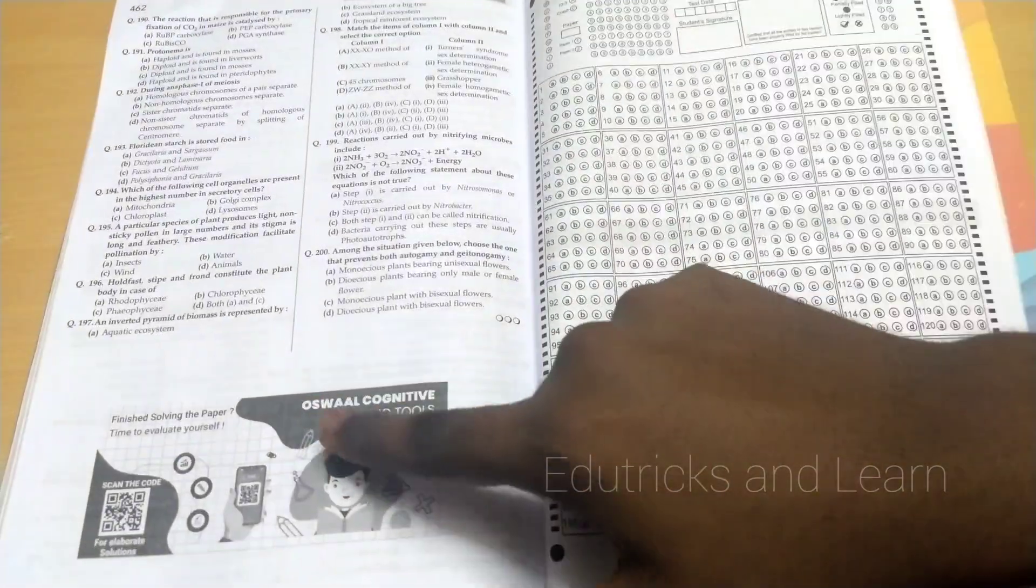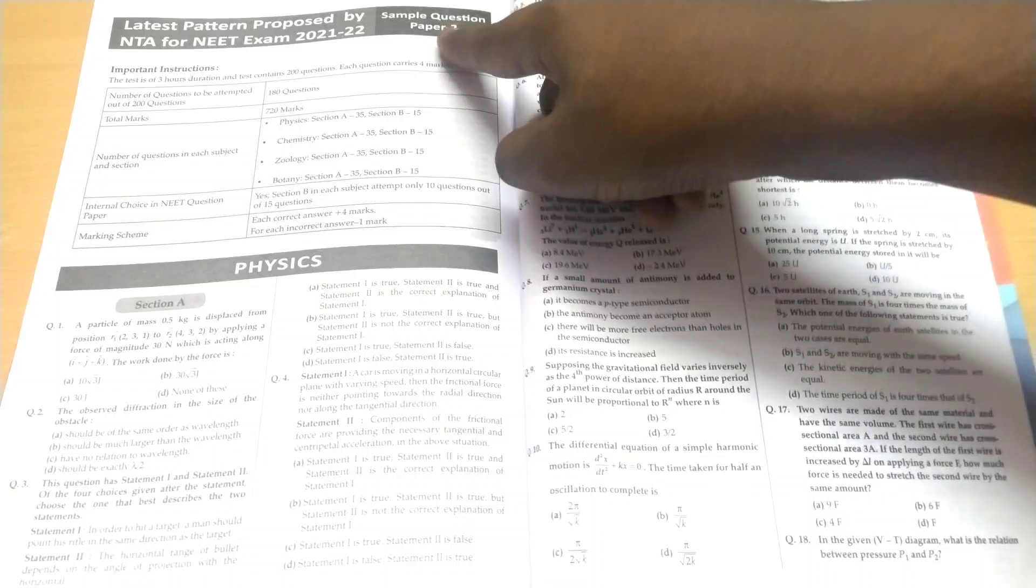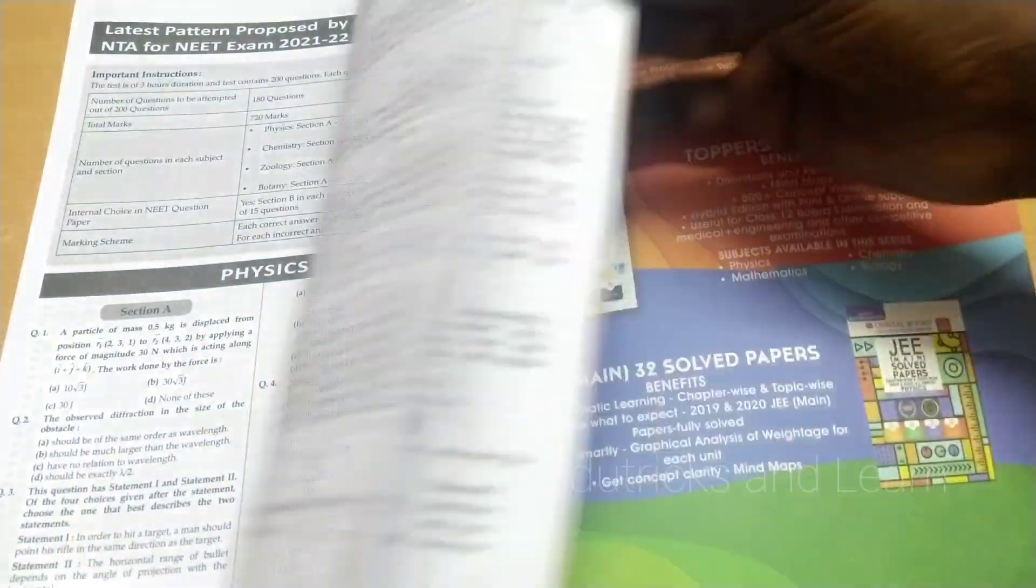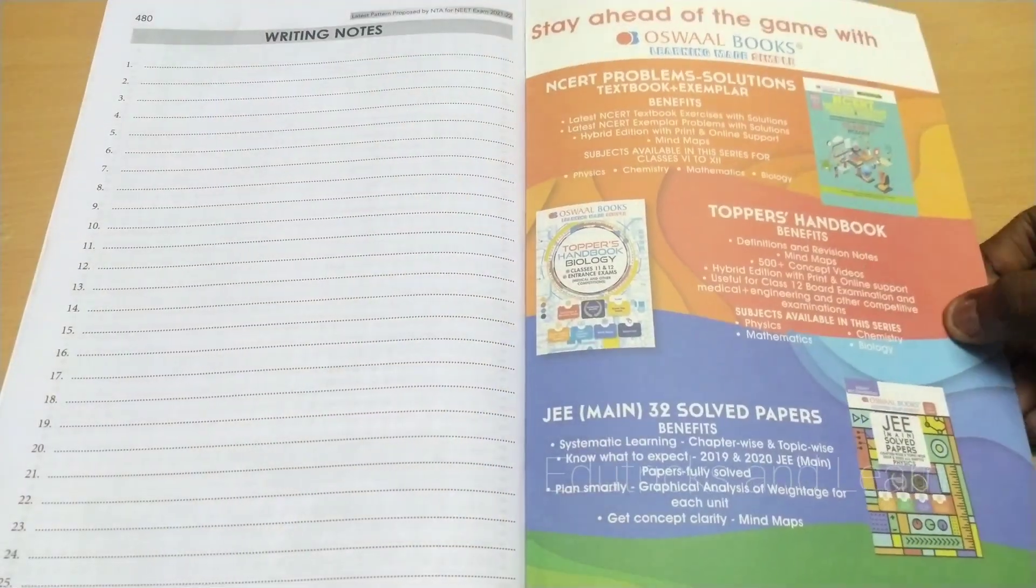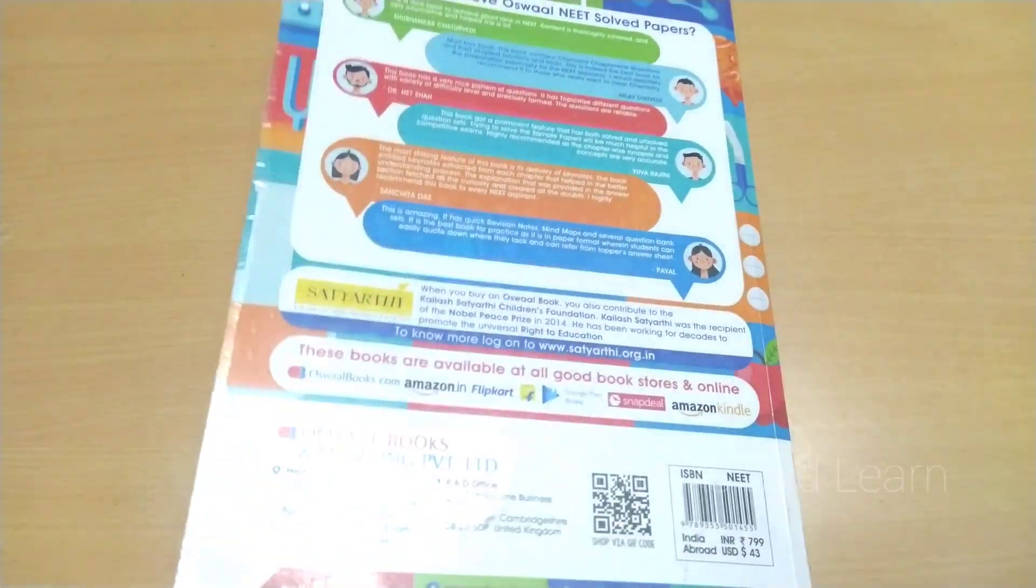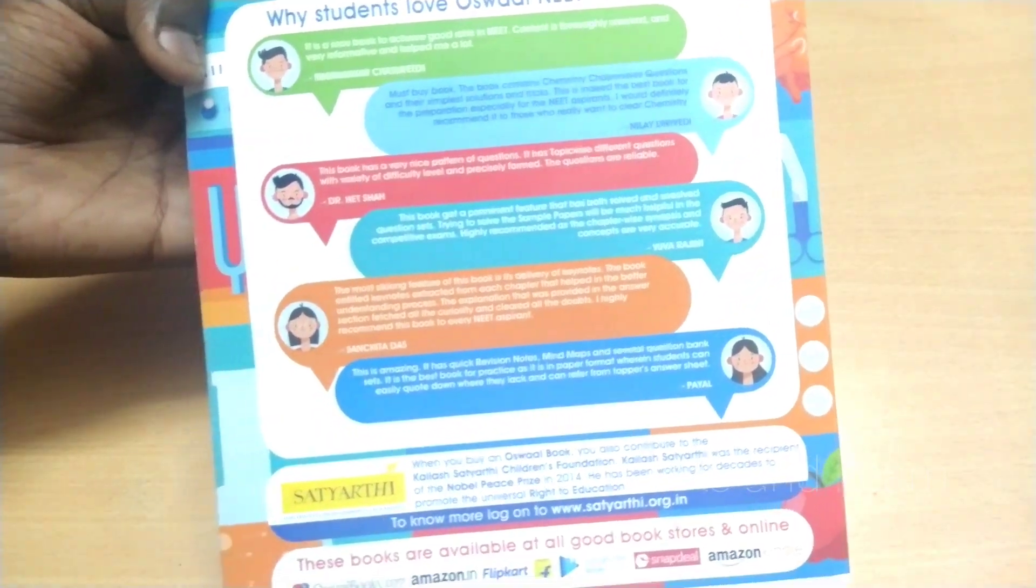If you need answers, you want to scan the QR code. You want to fill this OMR sheet. After filling this, your QR machine scans the QR code and checks your answers. Like that, they've given Sample Question Paper 2: physics, chemistry, zoology, and botany. At last, they've given OMR sheets and answer QR code. This is the complete analysis of Oswaal 34 Years Solved Paper NEET book.